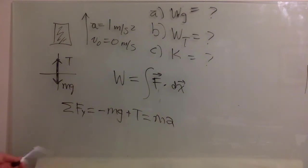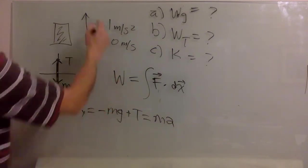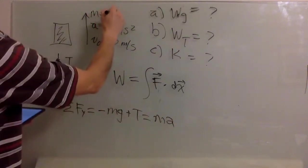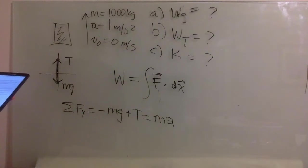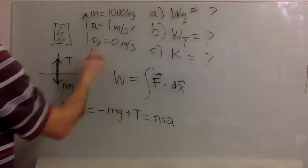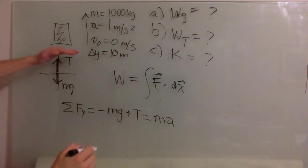The mass — I forgot to mention — is 1000 kilograms. And this distance, delta y, is going to be 10 meters. So it goes up from zero to 10 meters.